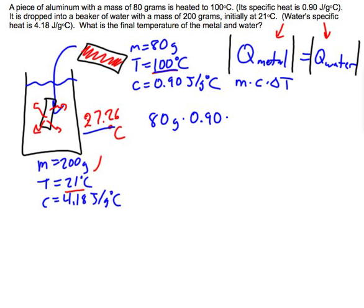27.26, that's 72.74, and that should equal the mass of the water, 200, times the specific heat of the water times the change in temperature of the water, which is 6.26. And if those are pretty close to equal, then we've done our problem right.